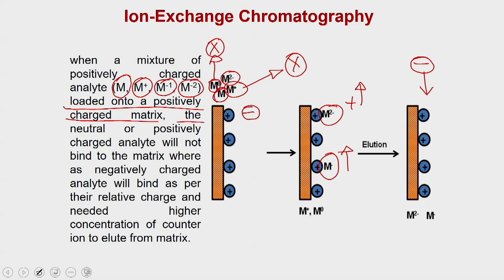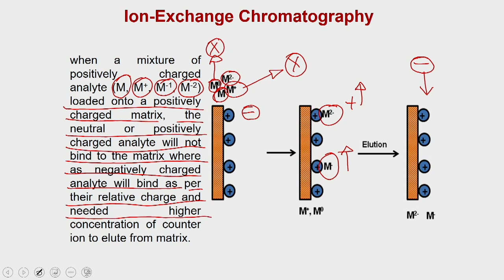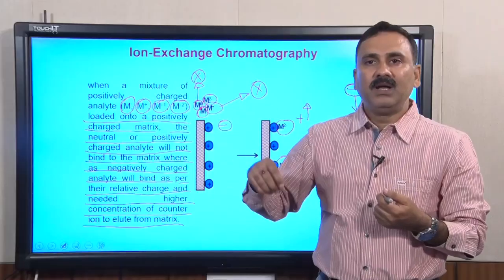The neutral or positively charged analyte will not bind to the matrix, whereas the negatively charged analyte will bind. As per their relative charges, they need a higher concentration of counter ion to elute — M2− has higher affinity for the matrix compared to M−, and as a result you have to supply a higher concentration of counter ion to elute M2− compared to M−.